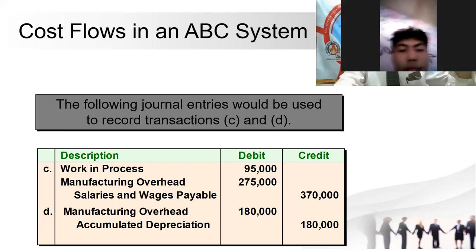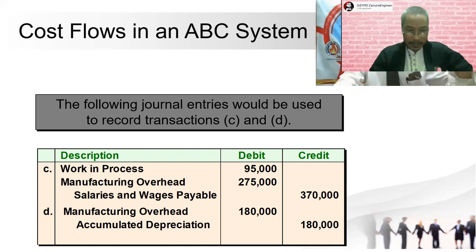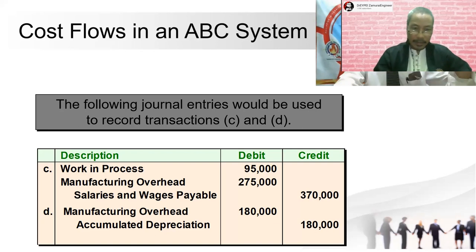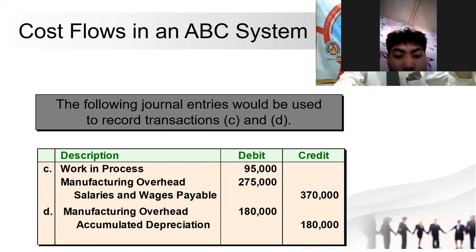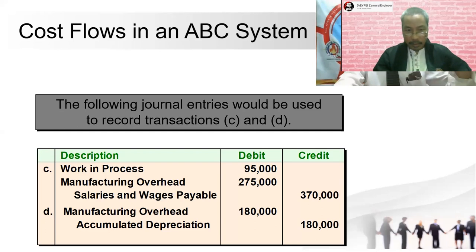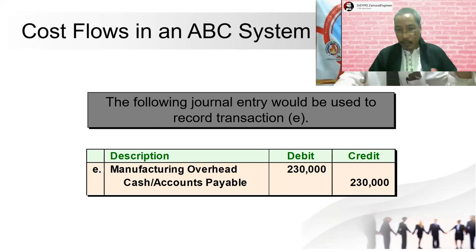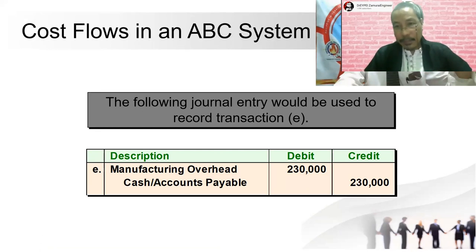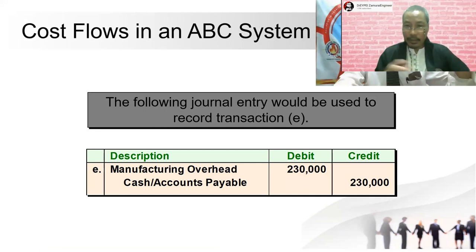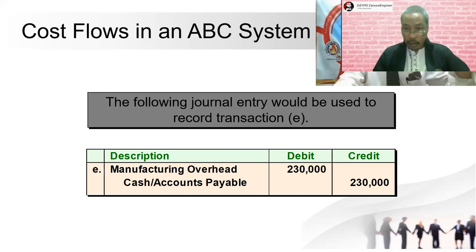For transaction D — depreciation of factory assets — we debit manufacturing overhead $180,000. Look at your screenshot for letter D. For transaction E — miscellaneous manufacturing overhead — we debit manufacturing overhead $230,000. Do not put a dollar sign in the journal; you only put dollar or peso signs in the transaction record listing, not in the journal or ledger.